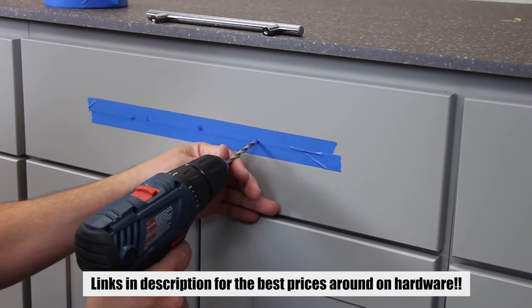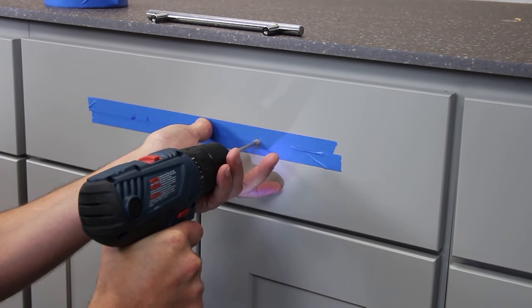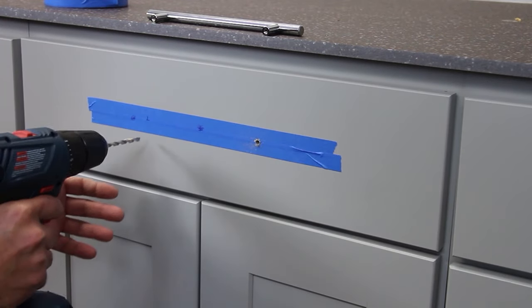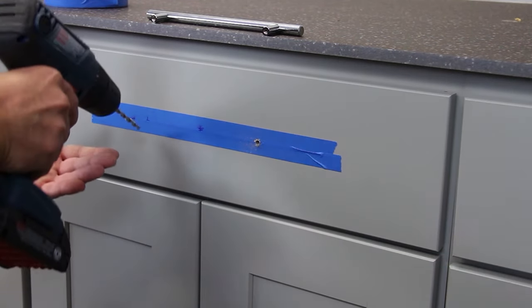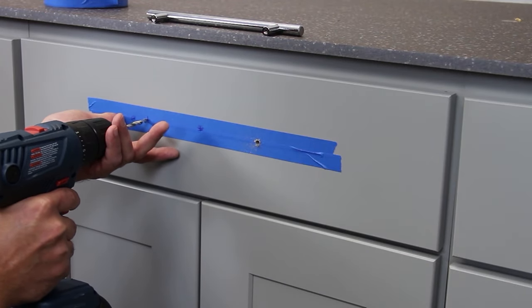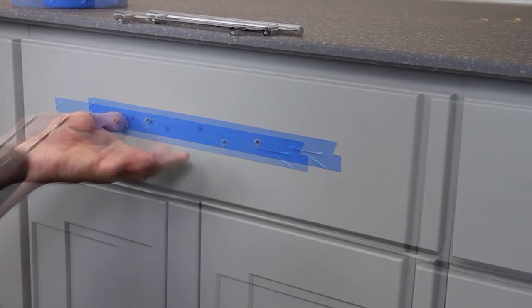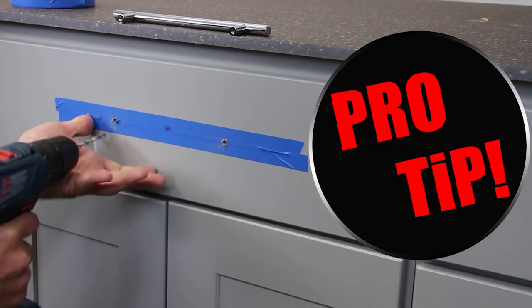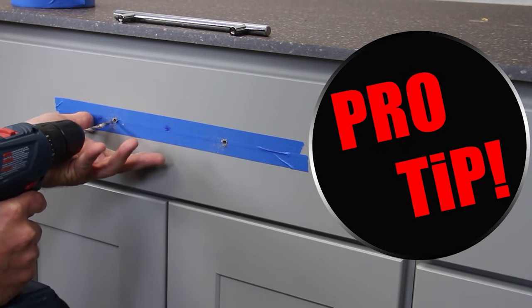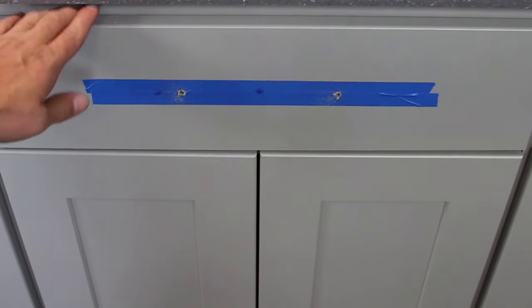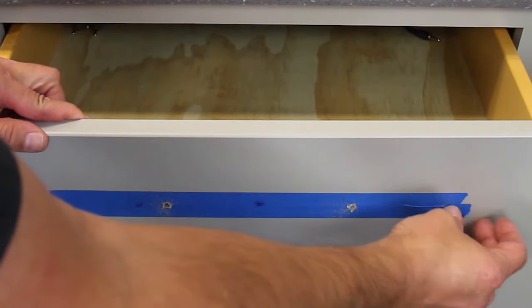Now the main thing here is you want to keep the drill nice and level. You don't want to go in at an angle because that could throw off your whole alignment. As you see I like to use my thumb and my hand as a grip and kind of as a stationary device for this screw gun. Okay so now we have that all drilled out, we can take our tape off.